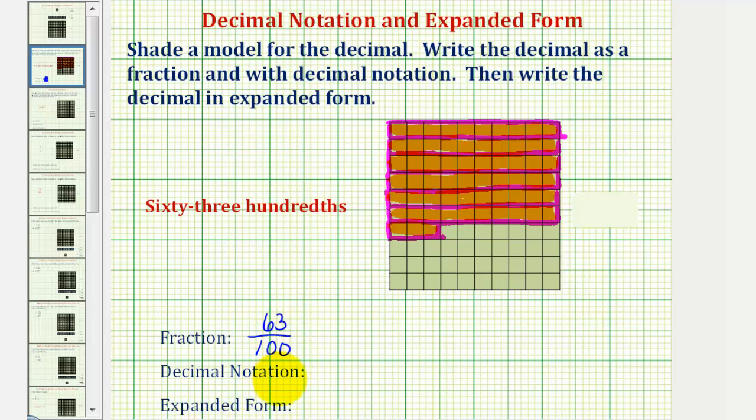Now for decimal notation, let's consider our place values. Notice the shaded region is less than one, so we'll put a zero in the ones place value. And now for the tenths place value, remember each long represents one tenth, and we have one, two, three, four, five, six longs, which represents six tenths, so we'd have a six in the tenths place value.